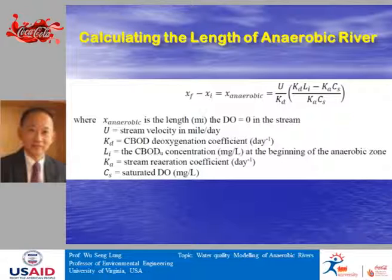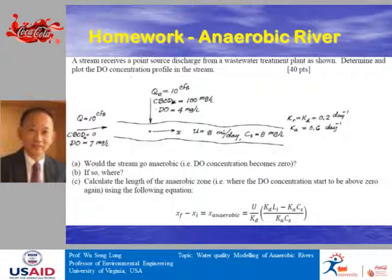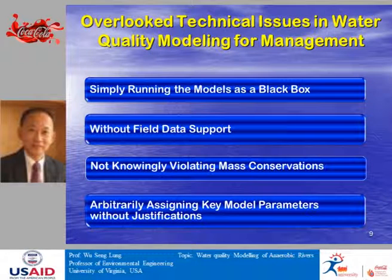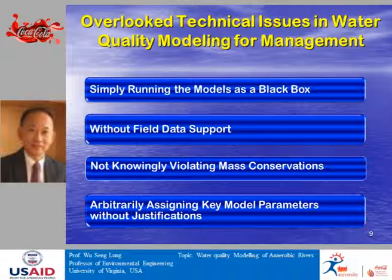We can calculate the distance between the start and end of the anaerobic zone using an equation derived from that Chilean paper. The example involves wastewater coming into a river with given attributes — the question being: will the stream go anaerobic, and if so, where and for how long? The answer is yes, the stream would go anaerobic. By the time it reaches 7.72 km, DO equals zero. The calculation justification follows from that equation.